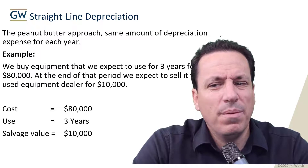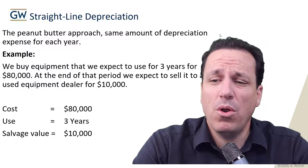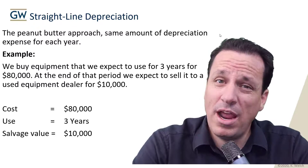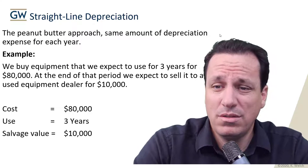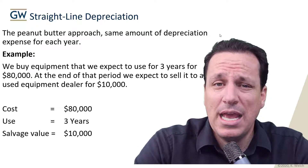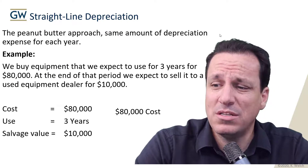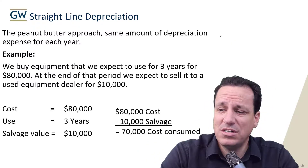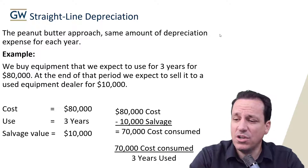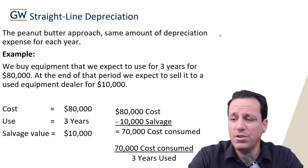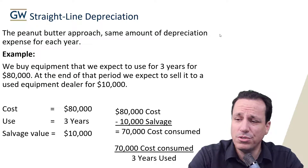So how much of the asset are we using up? According to these assumptions, we're using up about $70,000. This peanut butter approach takes that $70,000 and divides it by three, allocating that amount each year to accumulated depreciation and also reporting that amount on the income statement as depreciation expense. So: $80,000 cost minus $10,000 salvage = $70,000 cost consumed, divided over three years.